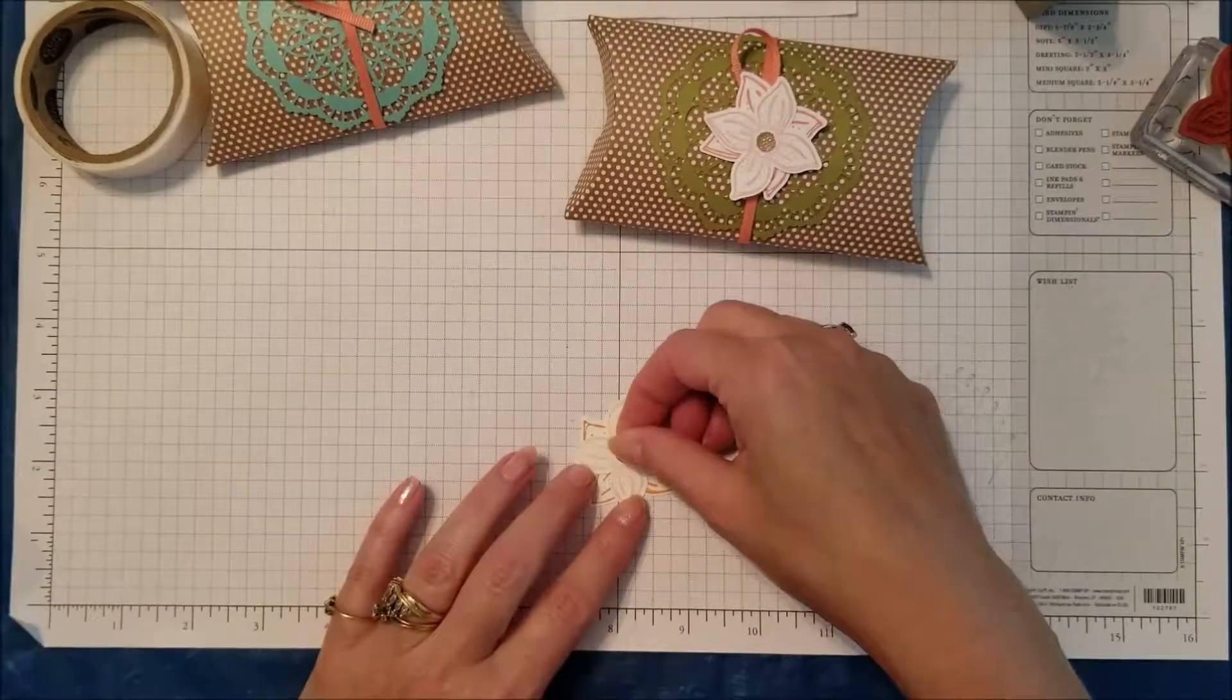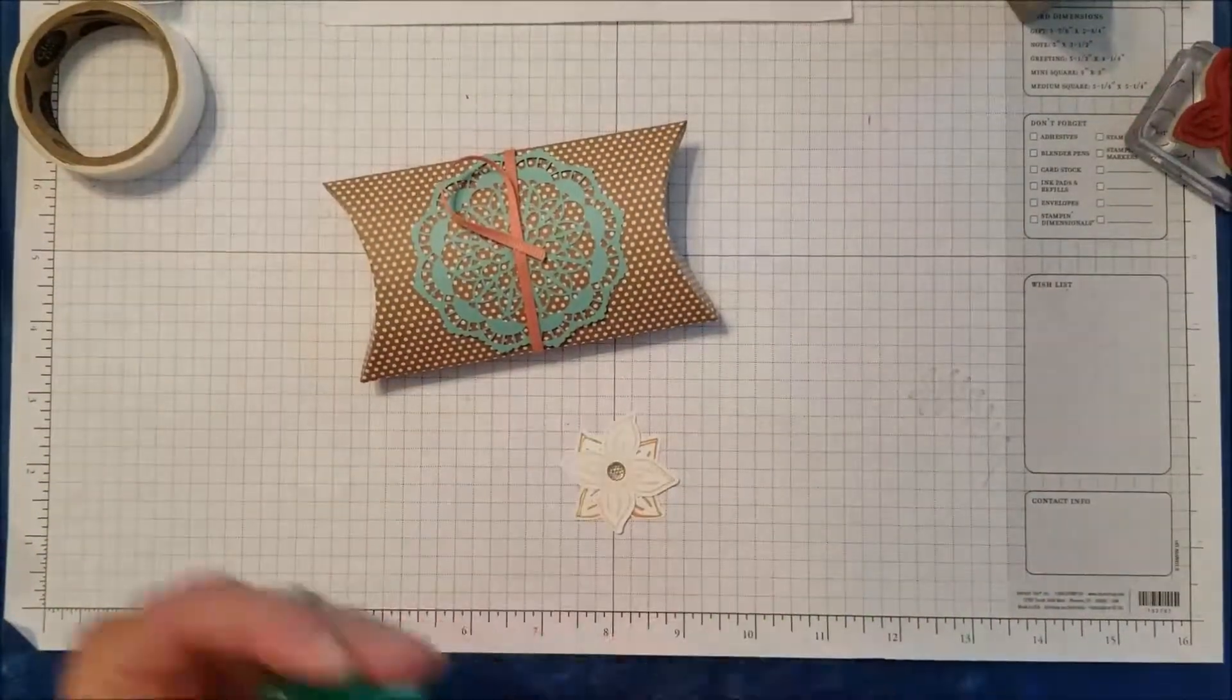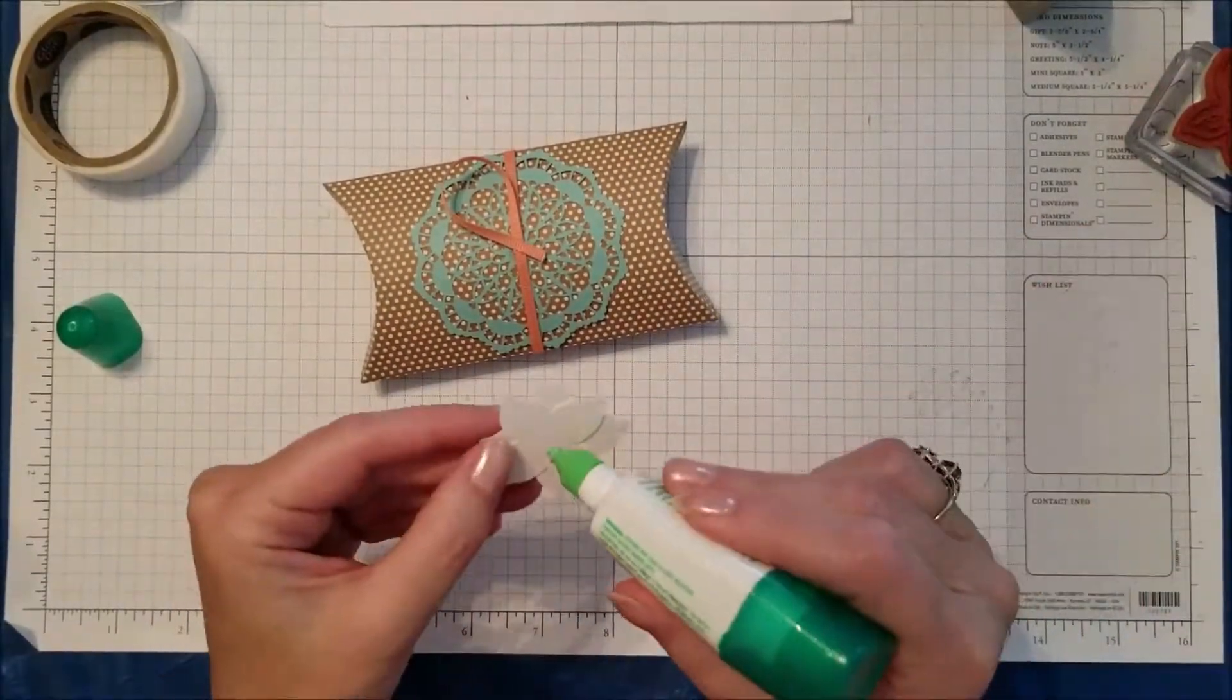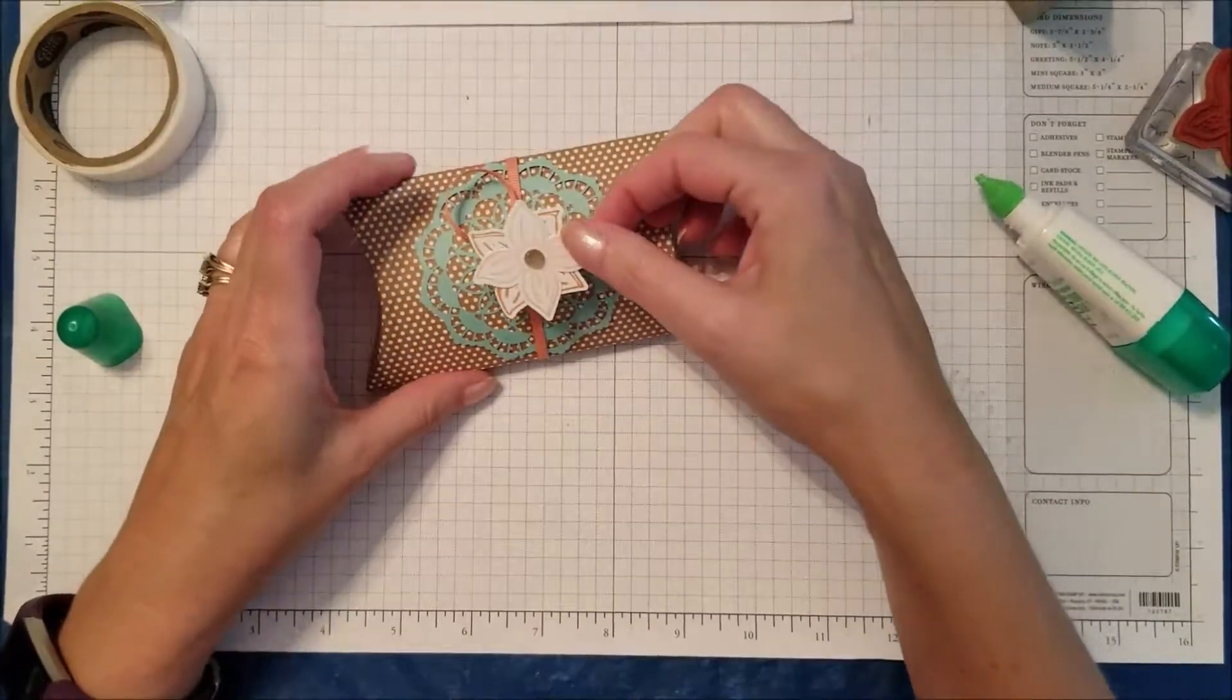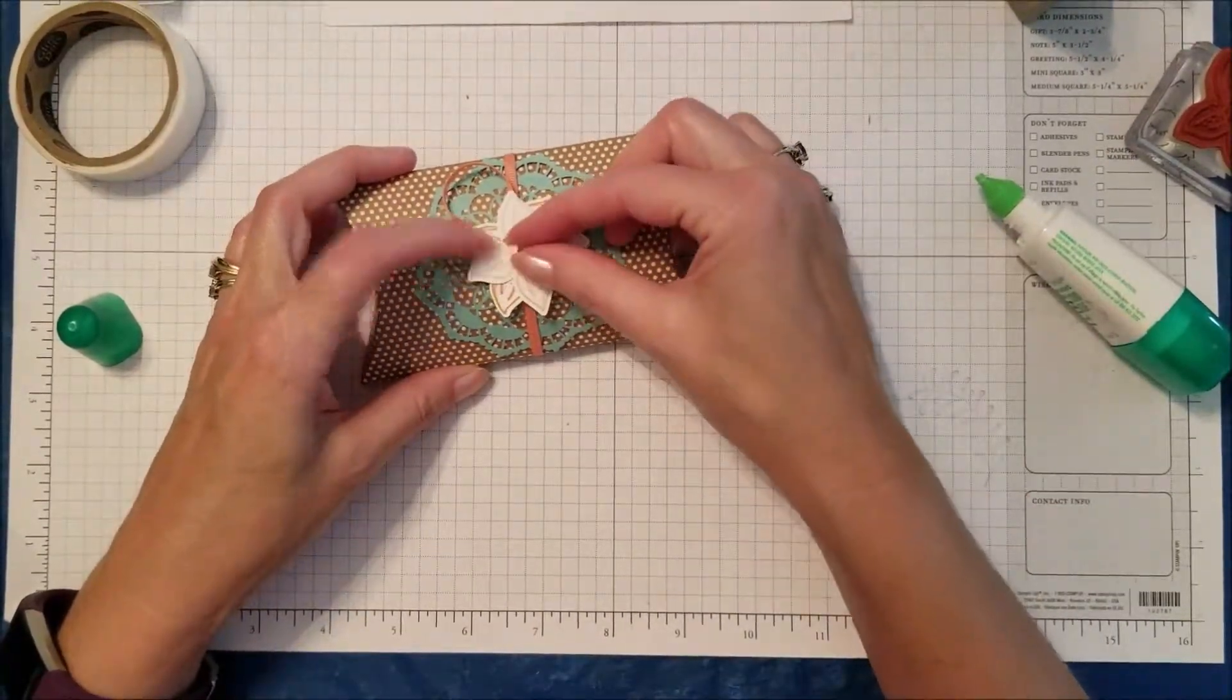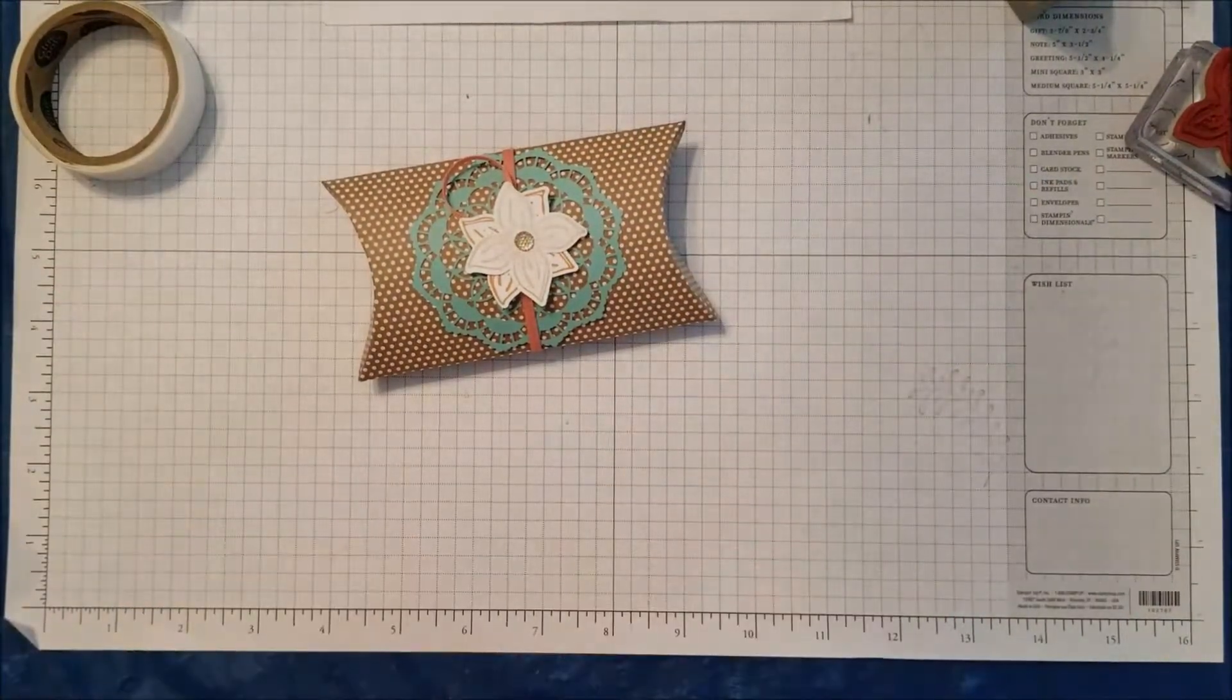Now to get my flower stuck down, back to my Tombow glue. I'm going to put a pretty good dollop of glue there because I want it to be able to stick and stay. I'm just going to do that and pop that.